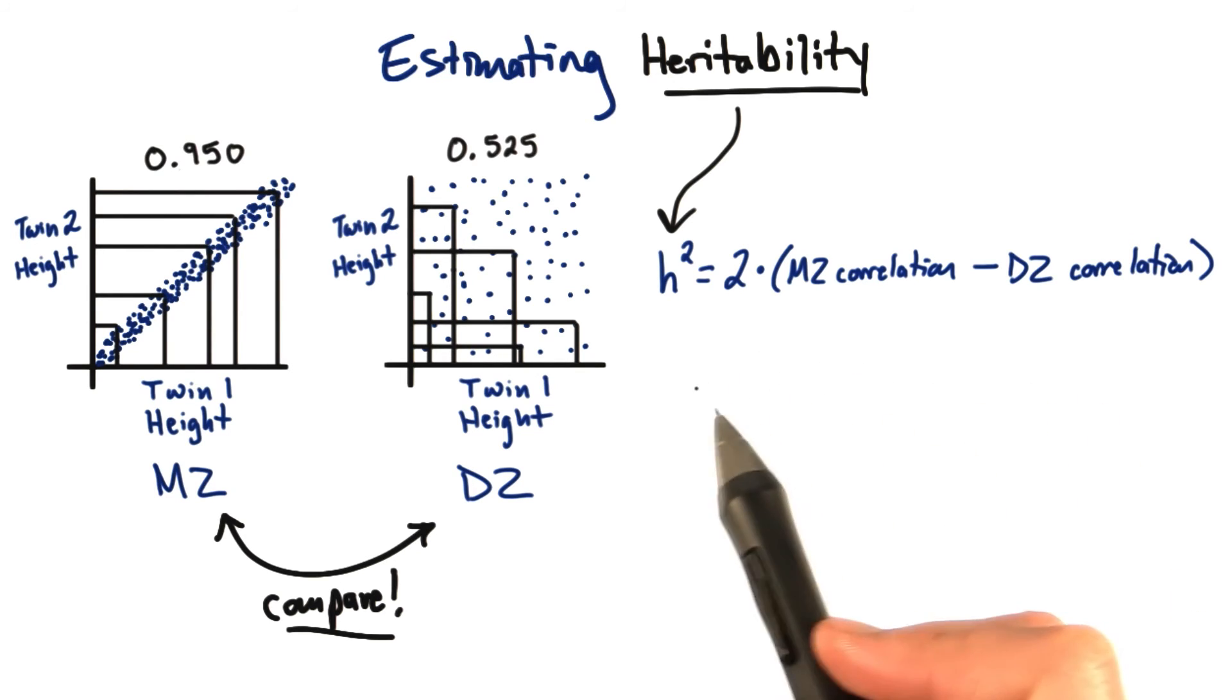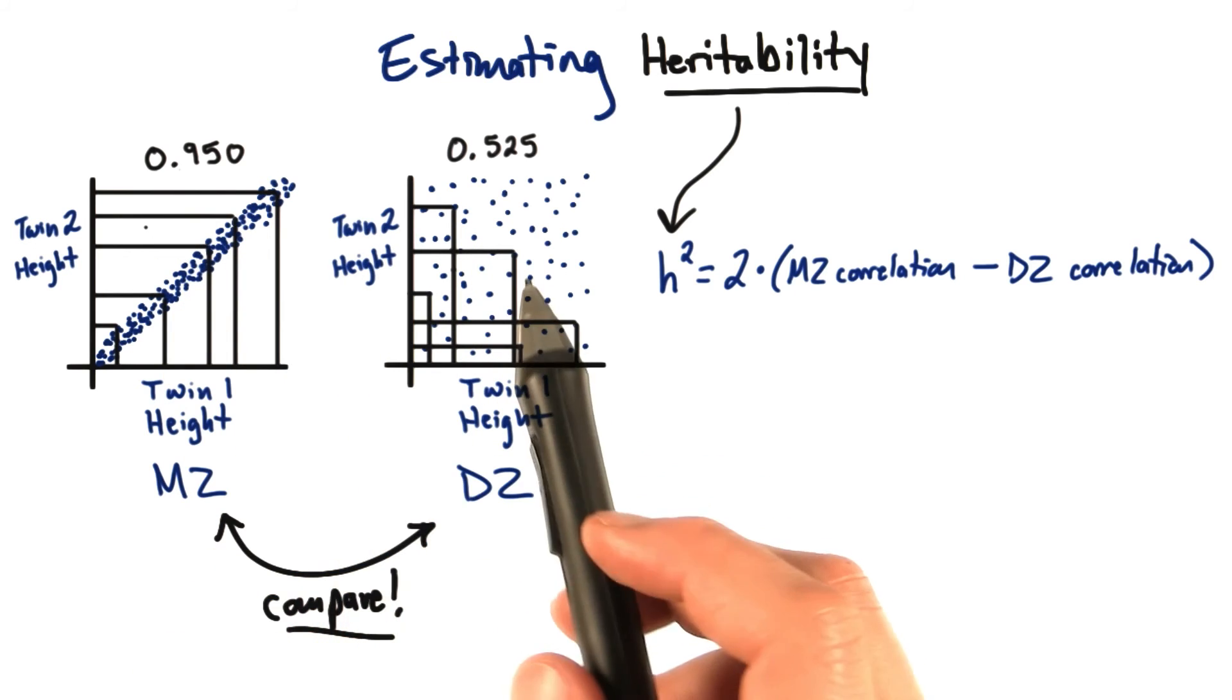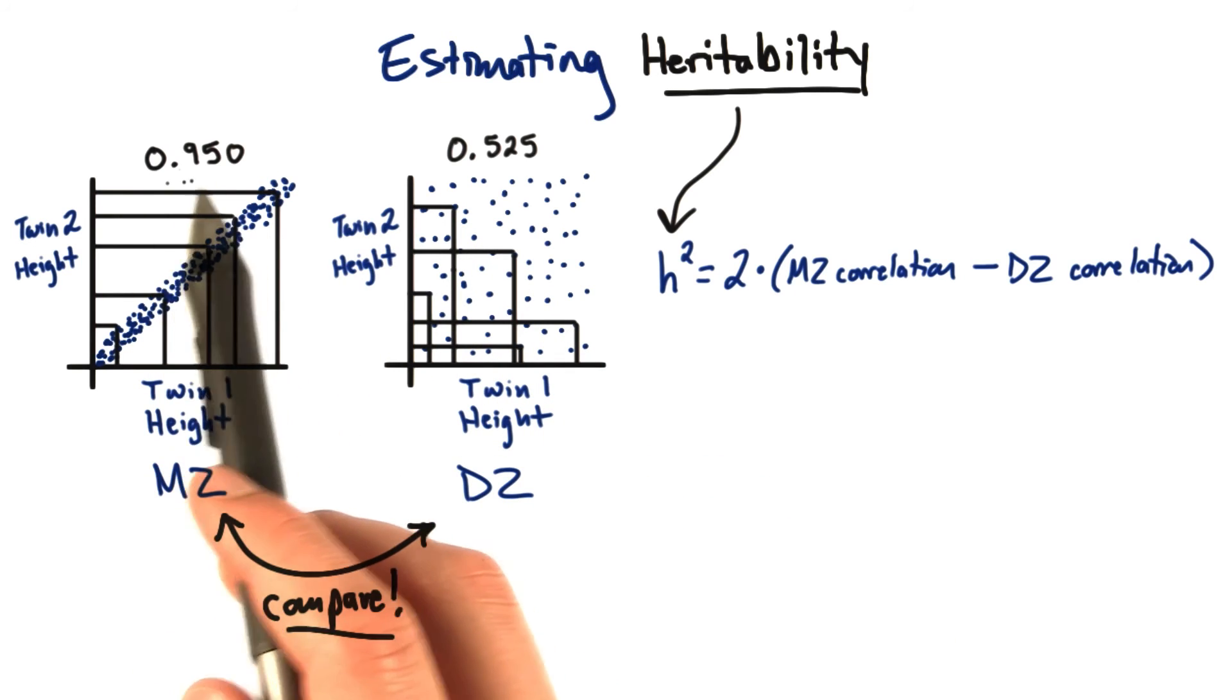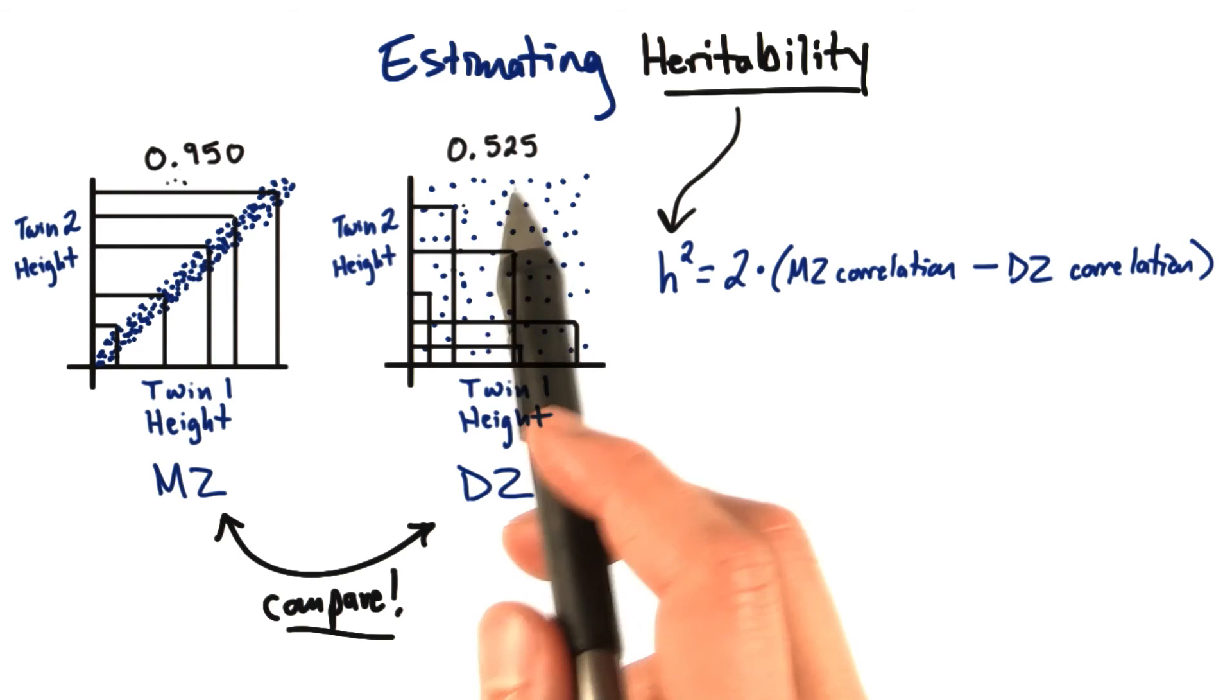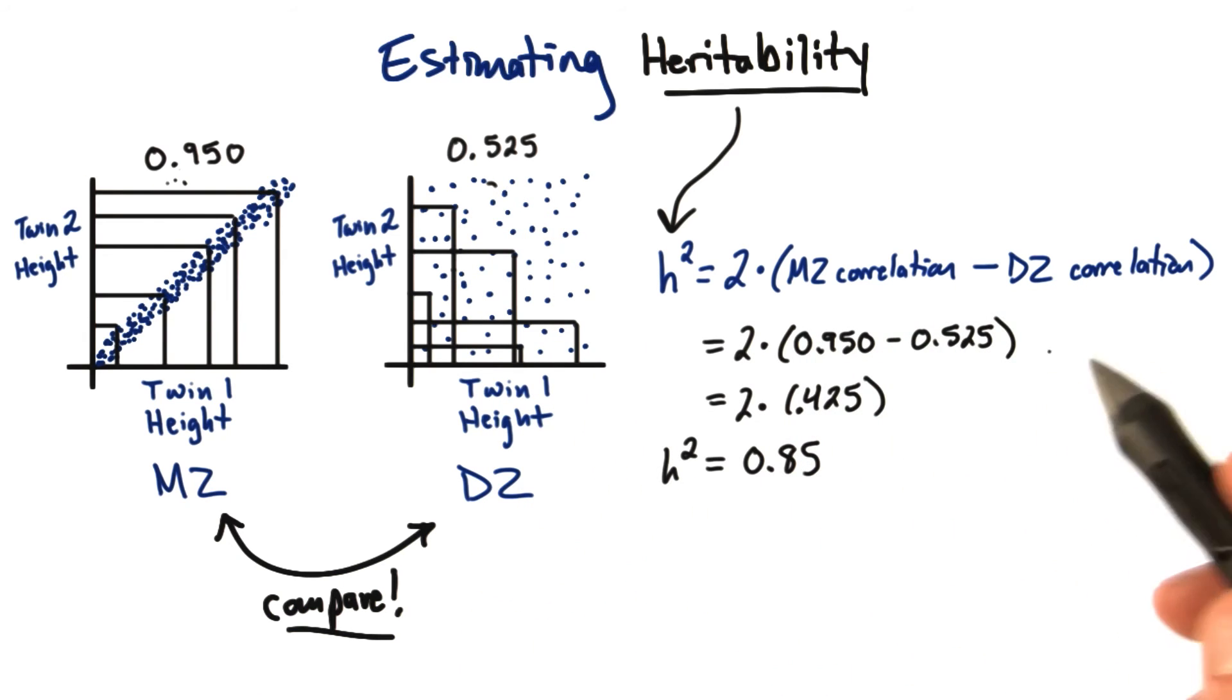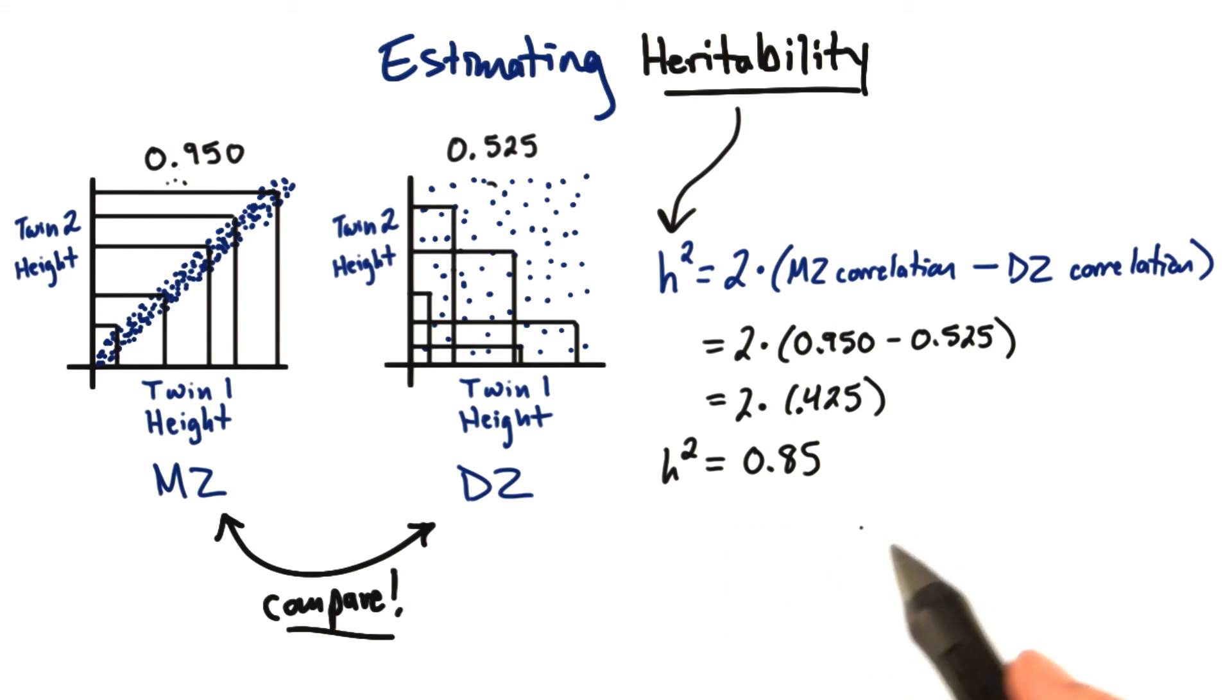So let's look at the heritability of a trait like height. Here we have a monozygotic correlation of 0.95 and a dizygotic correlation of 0.525. So if we plug these numbers into our equation, we get a heritability of 0.85, and this is actually the heritability of height in developed countries.